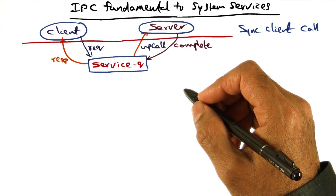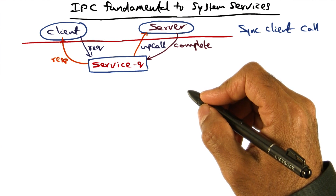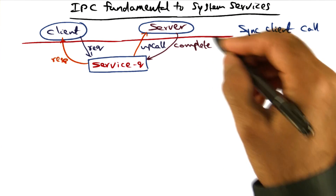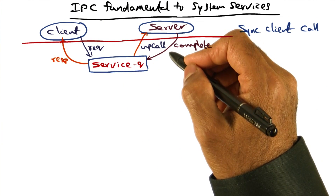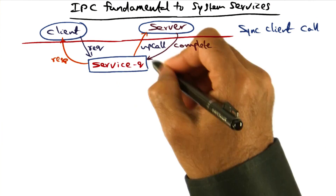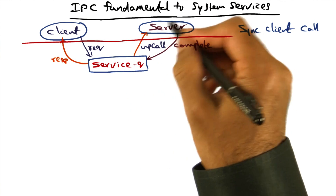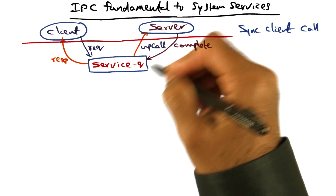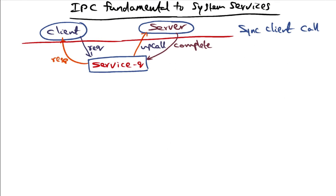Because Quicksilver is a distributed operating system, IPC both within and on the local area network is a crucial component of Quicksilver. This picture shows the semantics of the IPC call. In the kernel, there is a data structure called a service queue, which is created by the server that wants to service requests from clients. Clients make a request, and the kernel does an upcall to the server to indicate that there is a client request.